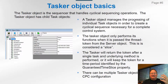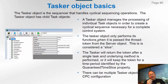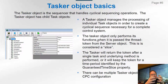A tasker manages the processing of individual task objects in order to create a cyclical sequence necessary to complete the actual control system. The tasker object will only perform functions when it gets the token from the server. When it gets a token, that's considered its time slice — we call it a slice. That operation of getting a token and doing a task is considered a slice.